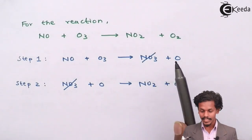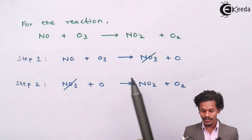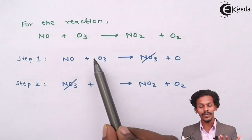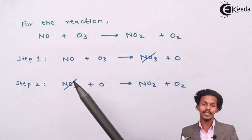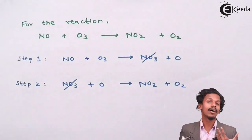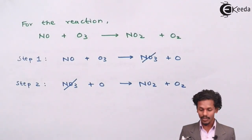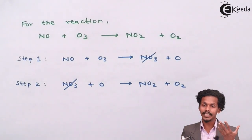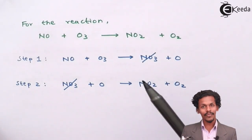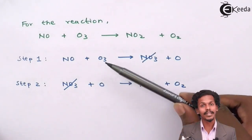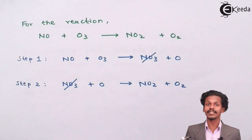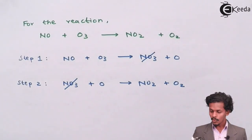We can determine the order of reaction for elementary steps. The order here is 2, because one mole of NO and one mole of ozone are involved, making the order and molecularity both equal to 2. However, for the overall reaction, the order cannot be predicted — values of x and y are experimental. The order of reaction relates to the elementary steps, and NO3 is not in the overall reaction so it has no order.